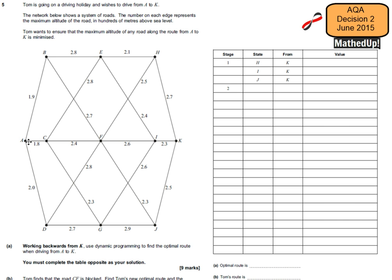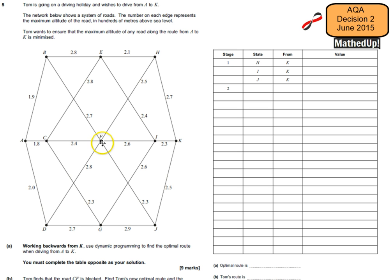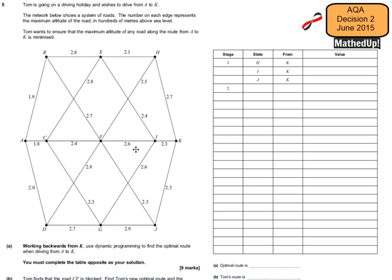Let's consider how that works. If he goes on path A, B, E, H, K, the highest altitude on this path is 2.8. On path A, C, F, I, K, the highest altitude he'd experience is 2.6. So Tom would choose A, C, F, I, K over A, B, E, H, K because the highest altitude there is 2.6 whereas the other is 2.8 — he's minimised the maximum altitude. However, that's just considering two routes; we want to consider all routes to get the best possible outcome.